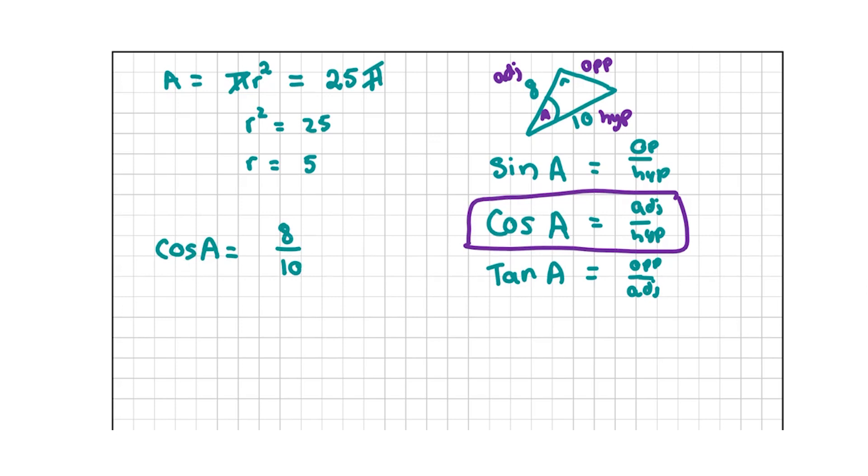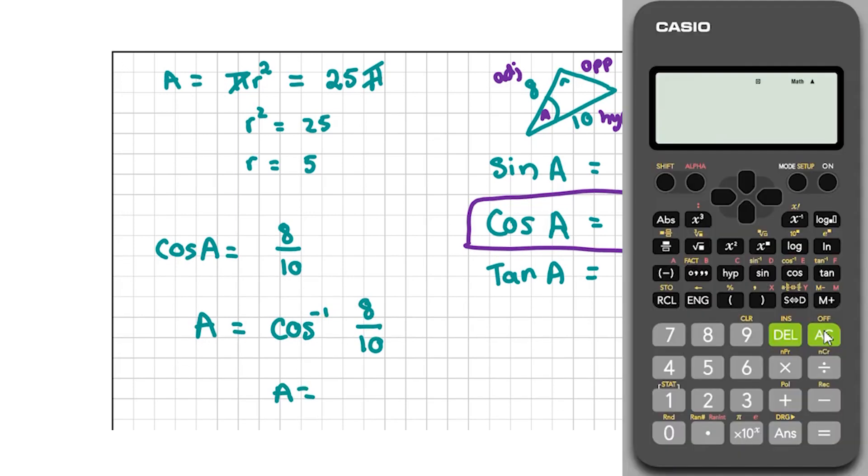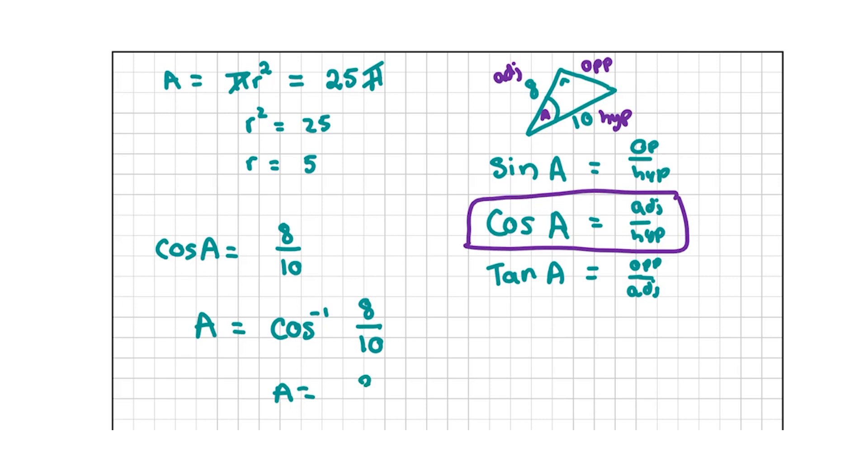So now we need to find the cos inverse. A equals the cos inverse of 8 divided by 10, and this is going to give us the answer. Let's go on to our calculators. To find the cos inverse, you're going to press shift and then press cos. You can see cos to the power of minus 1. Put in 8 over 10, and you're going to get 36.869 degrees. I'm going to round that to two decimal places, so it's 36.87 degrees. This is our final answer.